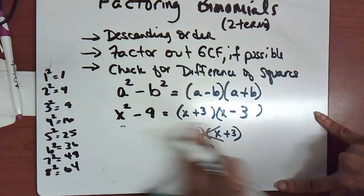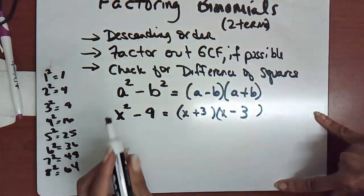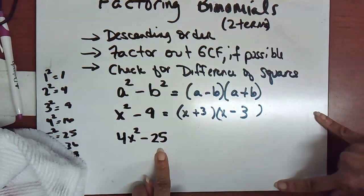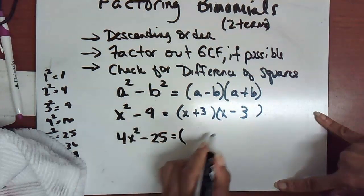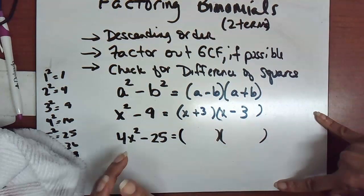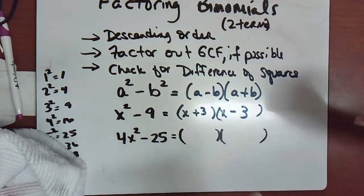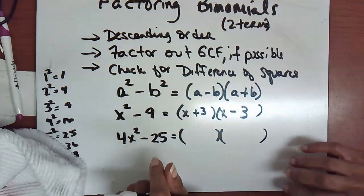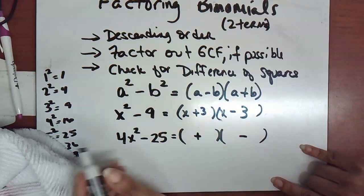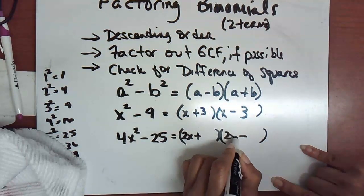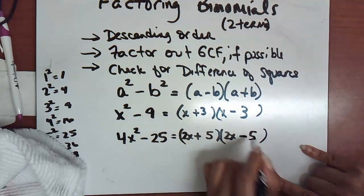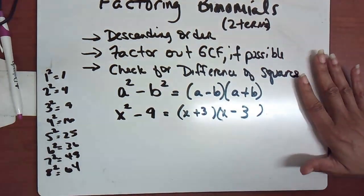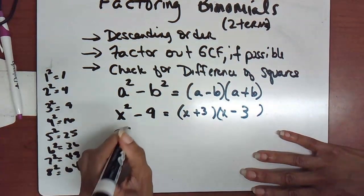It's about the difference of squares, not the sum. Let's look at 4x² - 25. Both 4 and 25 are perfect squares and it's subtracted, so we need two sets of parentheses. For 4x², the two equal factors are 2x and 2x. For 25, they are 5 and 5. So 4x² - 25 factors into (2x + 5)(2x - 5), with one plus and one minus sign.